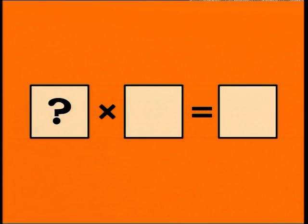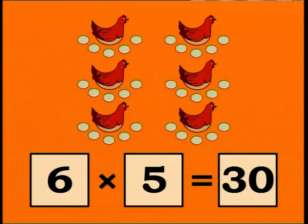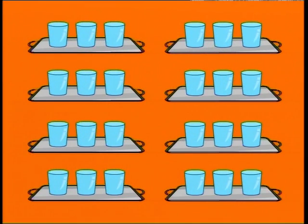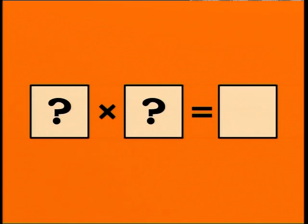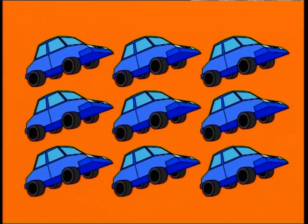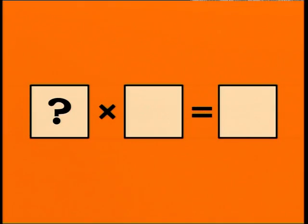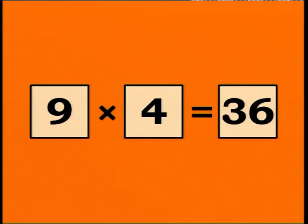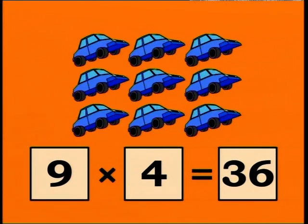Sheila has six hens. Each hen laid five eggs. How many eggs did Sheila get all together? Very good! Sheila got 30 eggs all together. There are eight trays. Each tray has three glasses on it. How many glasses are there all together? Well done! There are 24 glasses all together. A car has four tires. How many tires do nine cars have? That's right! Nine cars have 36 tires all together.